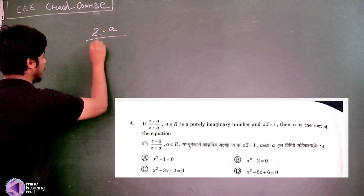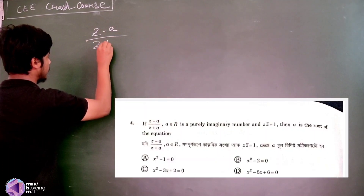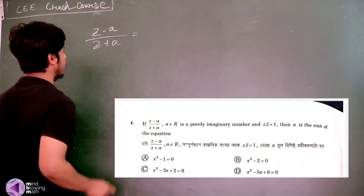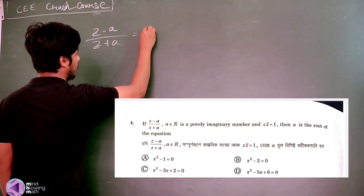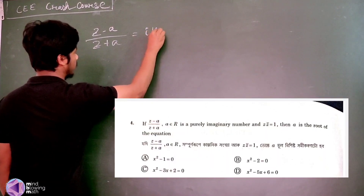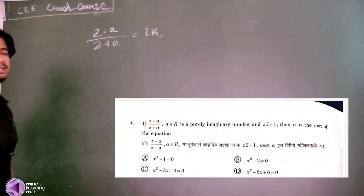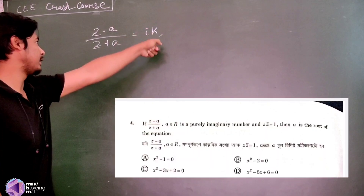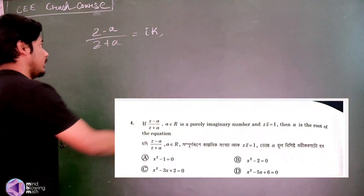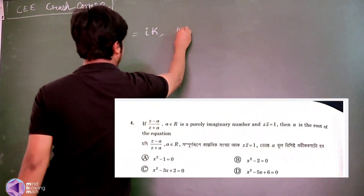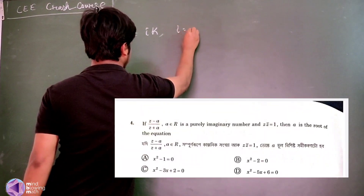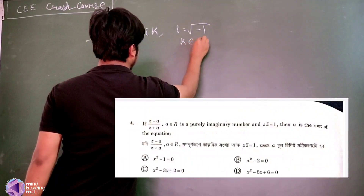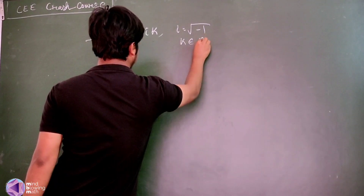We can represent (z minus a) divided by (z plus a) as equal to i times constant k, since a purely imaginary number can be written as i·k where k is a real number.